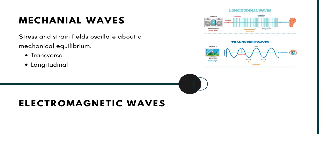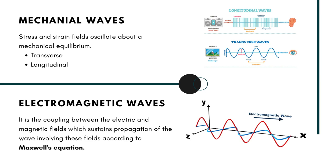In an electromagnetic wave, there is a coupling between electric and magnetic fields which sustain the propagation of waves involving these fields according to Maxwell's equation.